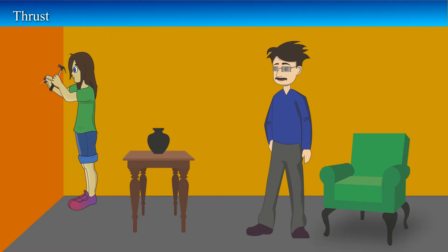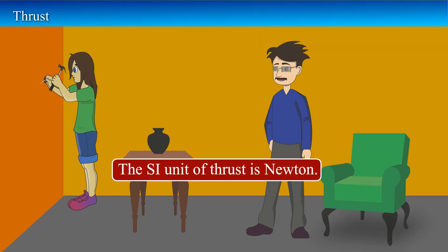I am trying to push this nail into the wall. Yes, you are applying force on the nail. Here the force is acting perpendicular to the surface. This is thrust. Thrust is a vector force acting normally on a surface. It is denoted by F. The SI unit of thrust is Newton.